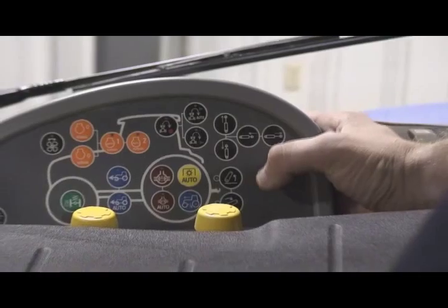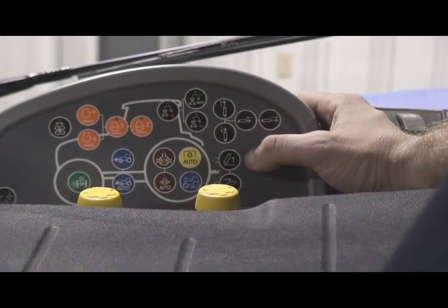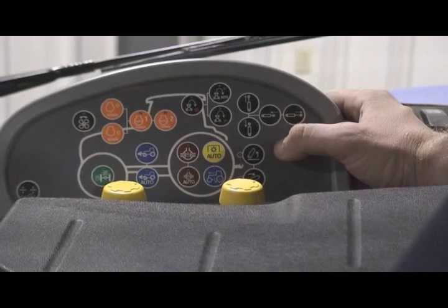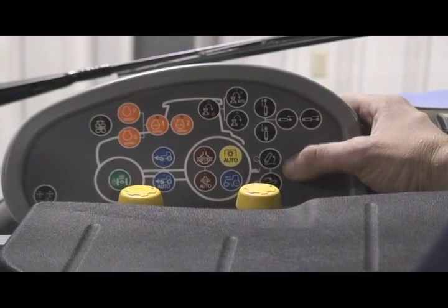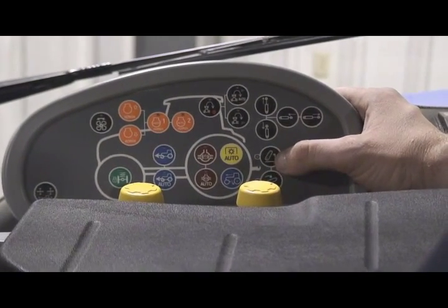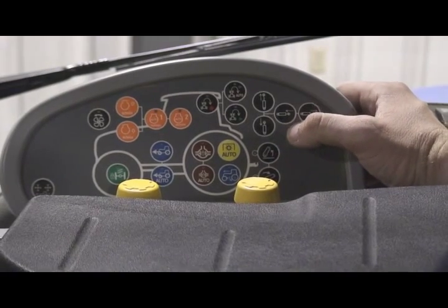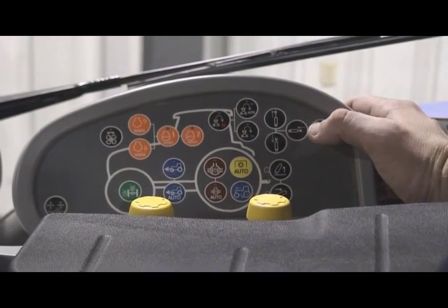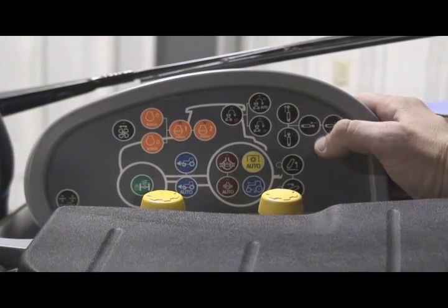Also notice the three-point hitch raise and lower. The three-point hitch raise and lower allows us the ability when we're backing up to implements to move the three-point hitch very slowly up and down, and also without having to reach for the EDC mouse.